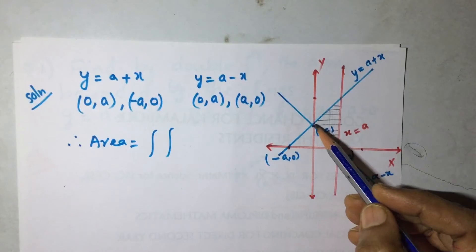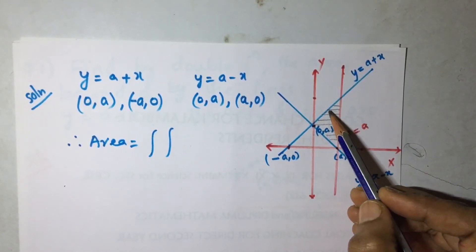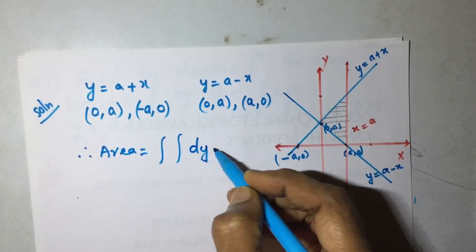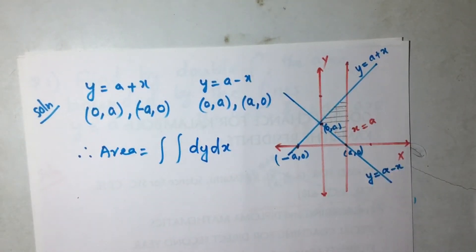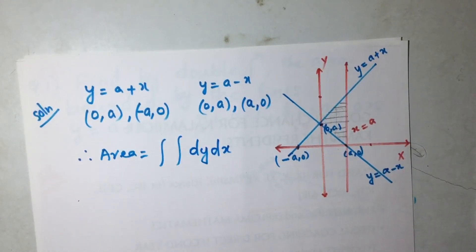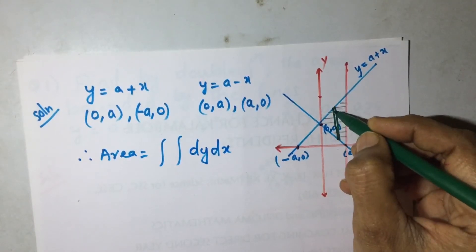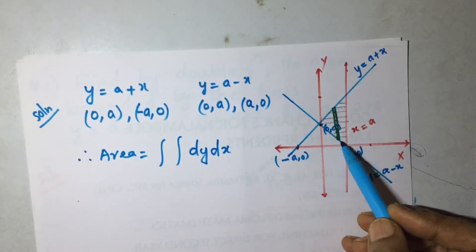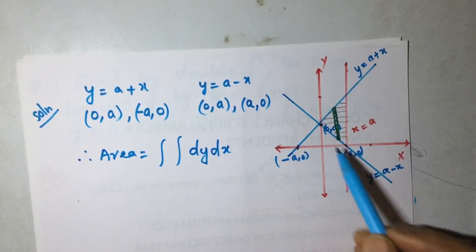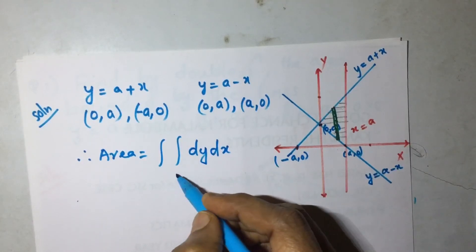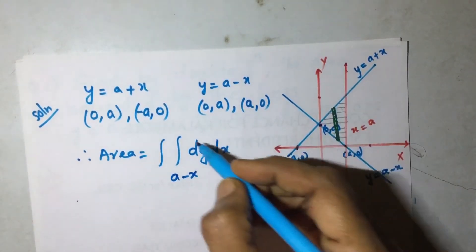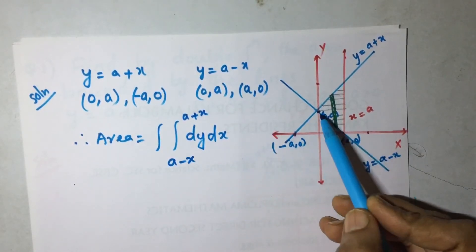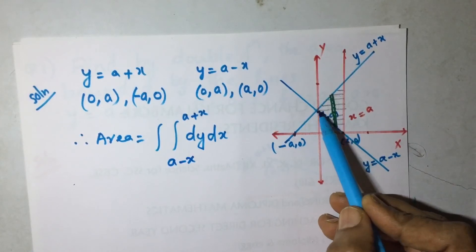So look for dy dx instead. If you draw a strip parallel to the y-axis, wherever it is, its endpoints are always on those two lines. So it's easier to calculate using dy dx. Consider a strip parallel to the y-axis: its lower part is on the line y equal to a minus x, so the lower limit of y is a minus x, and the upper part is on y equal to a plus x.